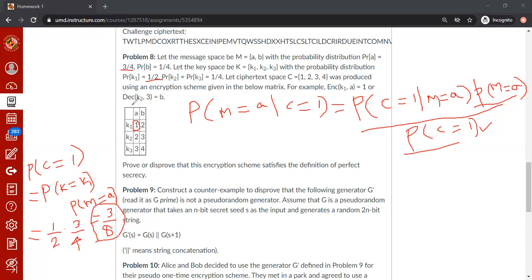So given that m equal to a means we are just going to focus on the first column, because the message is a. What is the probability that the ciphertext is 1? That there's only one key that can do that. That means the key has to be k1, which is nothing but half. The probability of k1 is half. So this component is half.